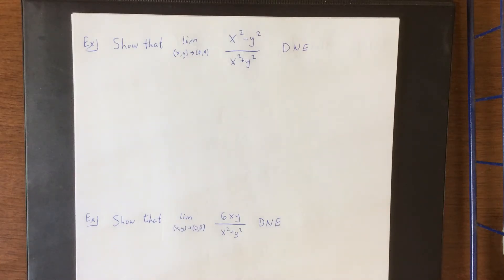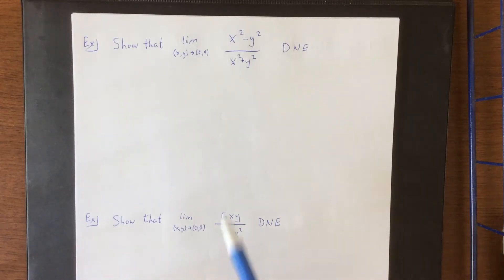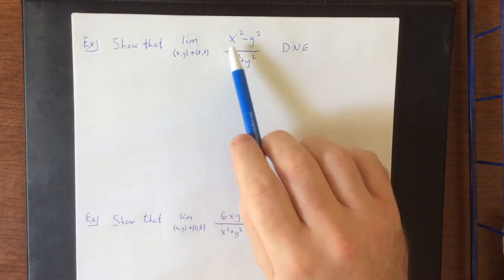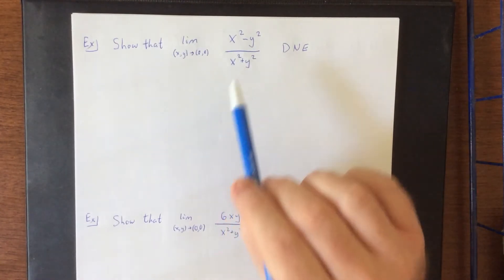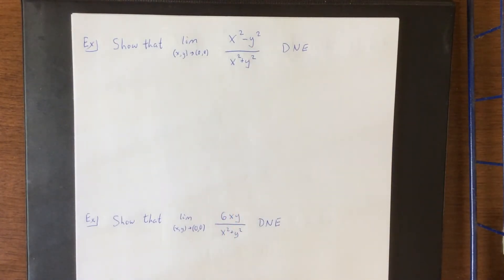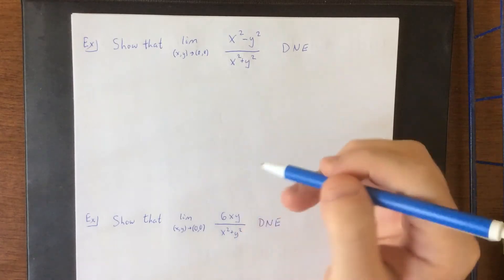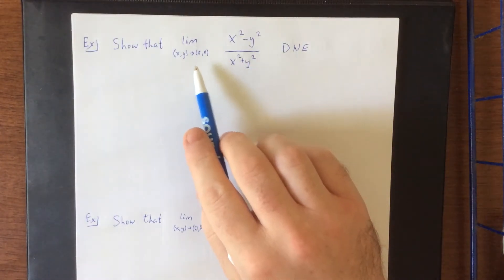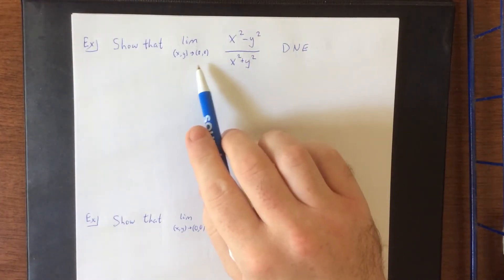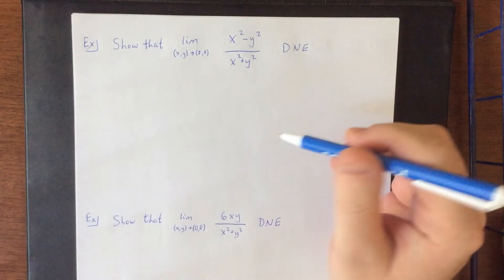Now I'd like to demonstrate how paths can be used to show that certain limits do not exist. First up we have the limit as (x, y) approaches (0, 0) of x squared minus y squared over x squared plus y squared. When selecting paths, you're allowed to pick any curve that passes through the ordered pair (0, 0).